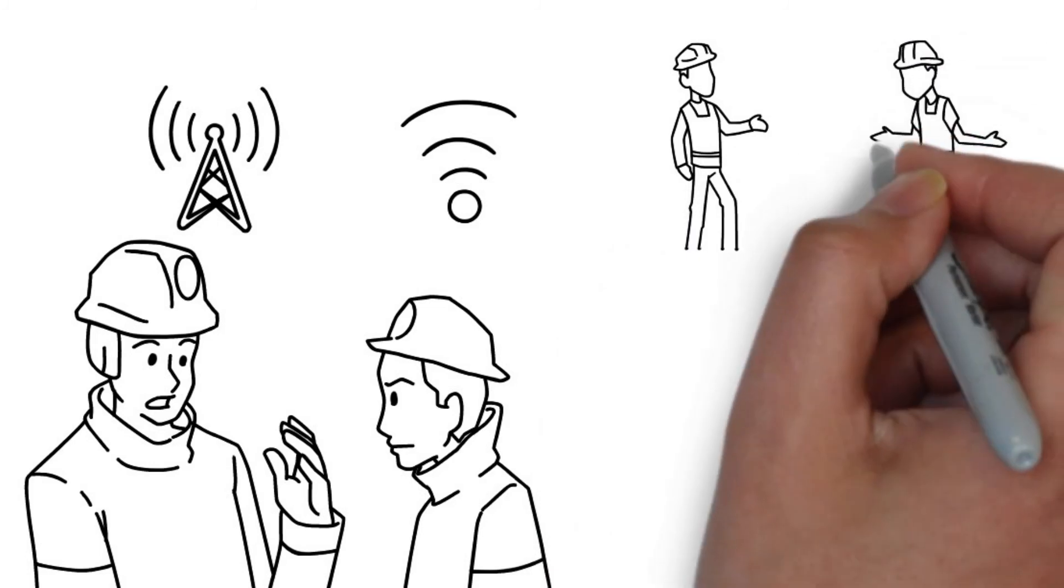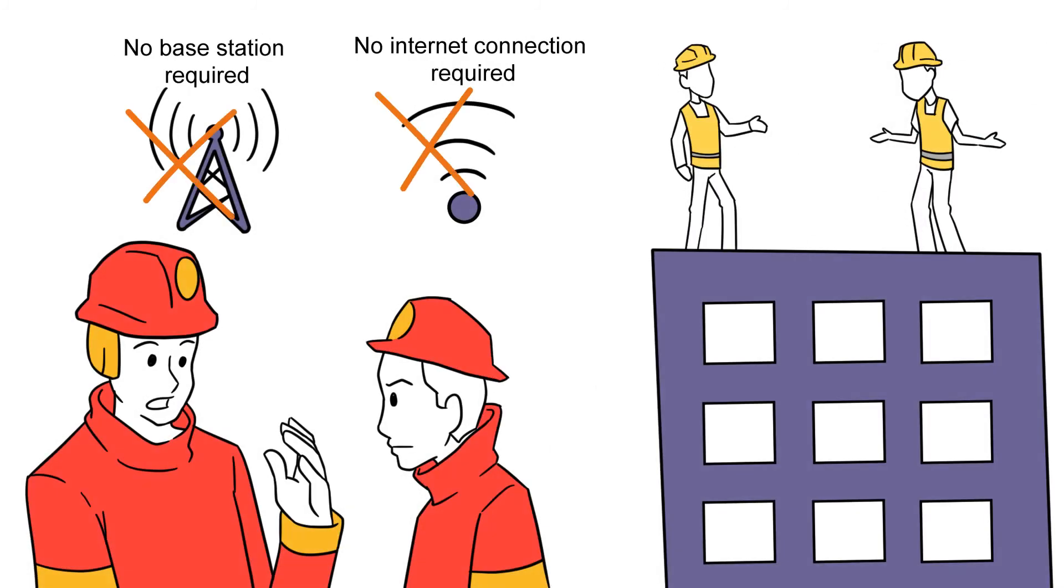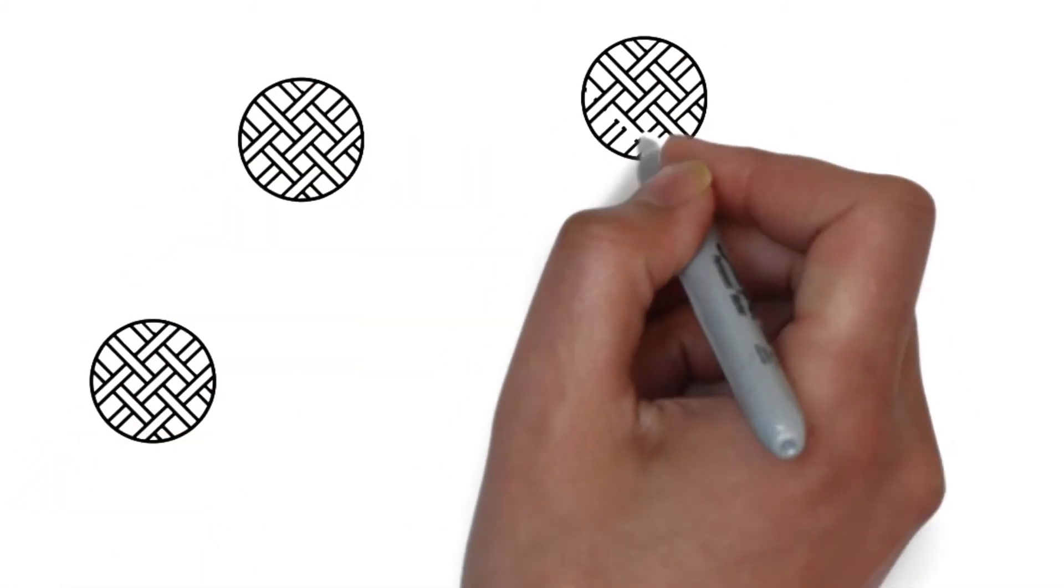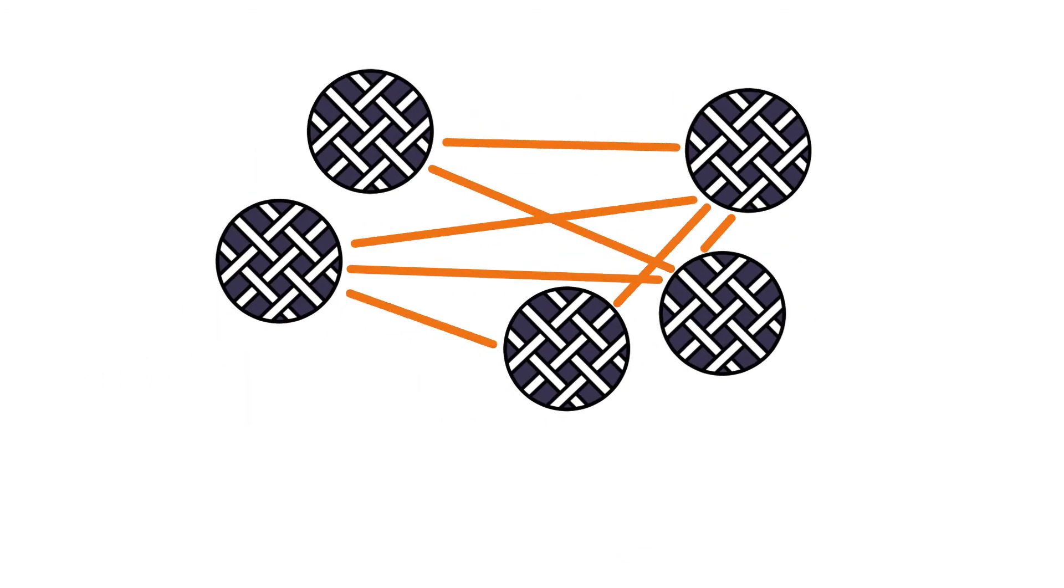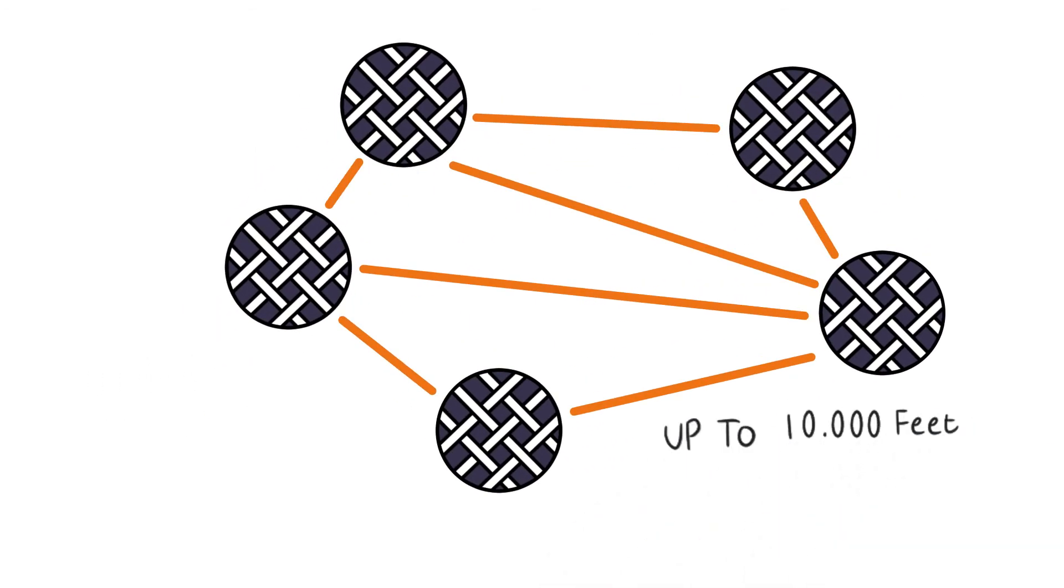It's autonomous or off-grid, meaning that it doesn't require a base station or Internet connection like cell networks or DECT. Dynamic, creating a flexible network, giving up to 15 units the freedom to move and communicate with each other at a range of up to 10,000 feet.